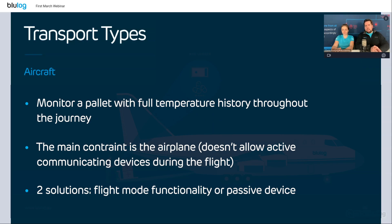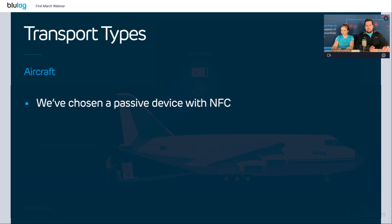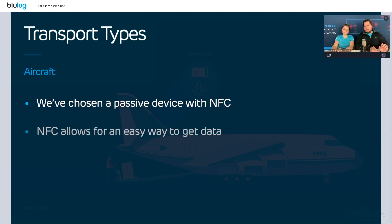Or you have a completely passive device which just monitors and registers the temperatures, and then you have the full history at the end. For this use case, we've chosen the second option with NFC — because it's a very easy and user-friendly way to get data without having to take the device inside the pallet and bring it to a computer to read.